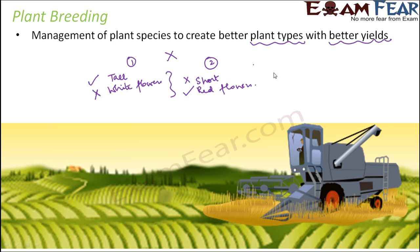Once the breeding is done, the result might be some tall plants with red flowers. With these tall plants with red flowers, you can further self-pollinate them and produce plants of similar types. So the desirable traits are selected and then accordingly the plants are allowed to breed — that is how plant breeding is done.